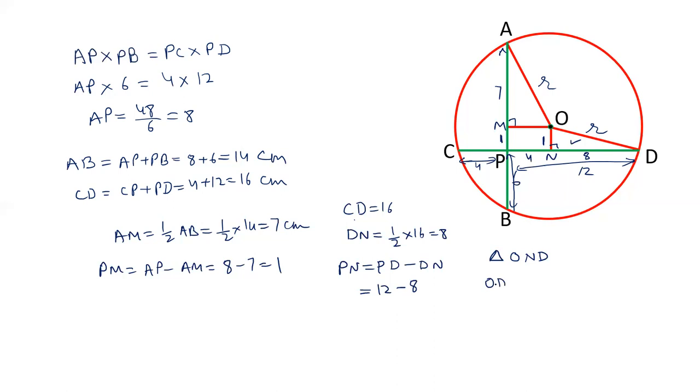The square of hypotenuse OD square is equals to ON square plus DN square. OD square is R square. ON is 1 square. DN is 8 square. So, R square is 1 plus 64. R square is 65. And R is equals to root 65.